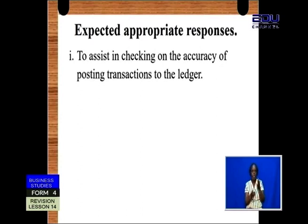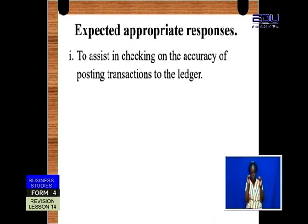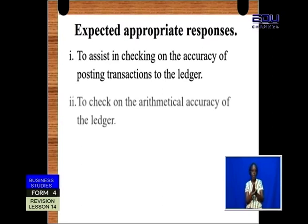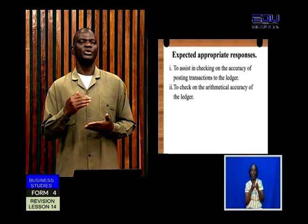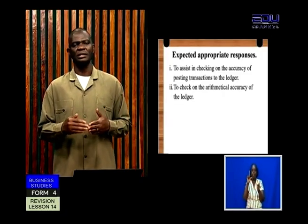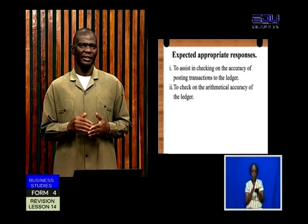The expected responses are as follows. The first purpose is to assist in checking on the accuracy of posting transactions to the ledger. The second purpose is to check on the arithmetical accuracy of the ledger — whether your additions and subtractions were done correctly to get the balance carried down.